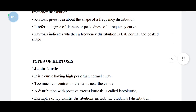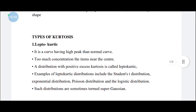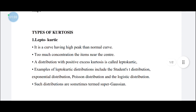There are three types of kurtosis. The first one is leptokurtic. It is a kind of distribution having a high peak than normal. A leptokurtic distribution has a higher peak than a normal symmetrical distribution.